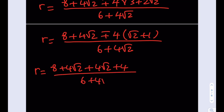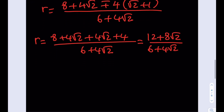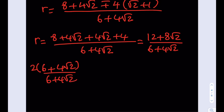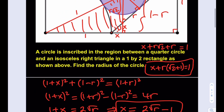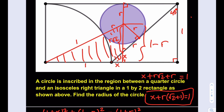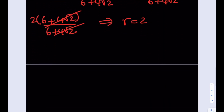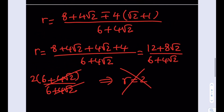Taking the positive sign: numerator is 8+4√2 + 4√2+4 = 12+8√2. Dividing by 2 gives (6+4√2)/(3+2√2), and taking out a factor of 2 from numerator and denominator shows one solution is r = 2. But that's impossible since the base of our rectangle is 2, so we disregard that solution.